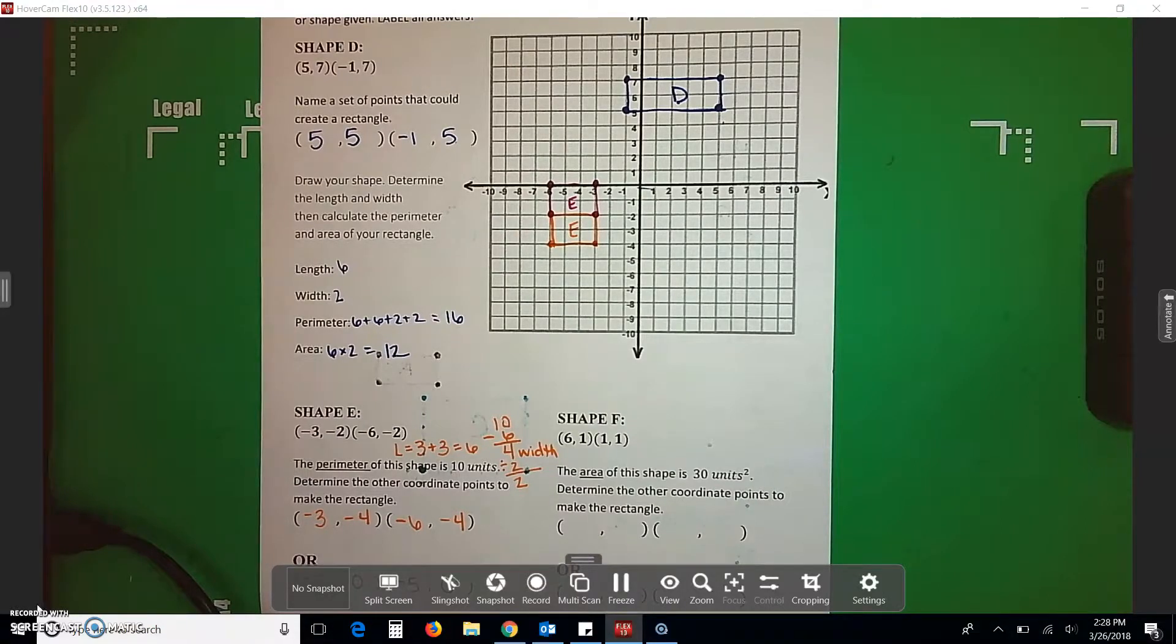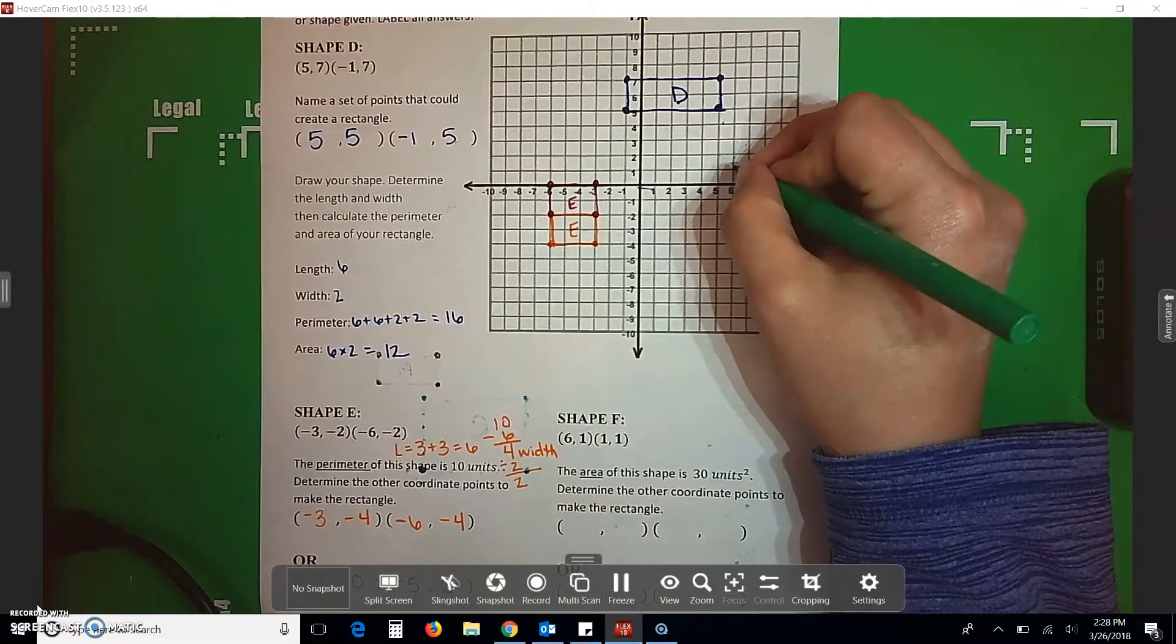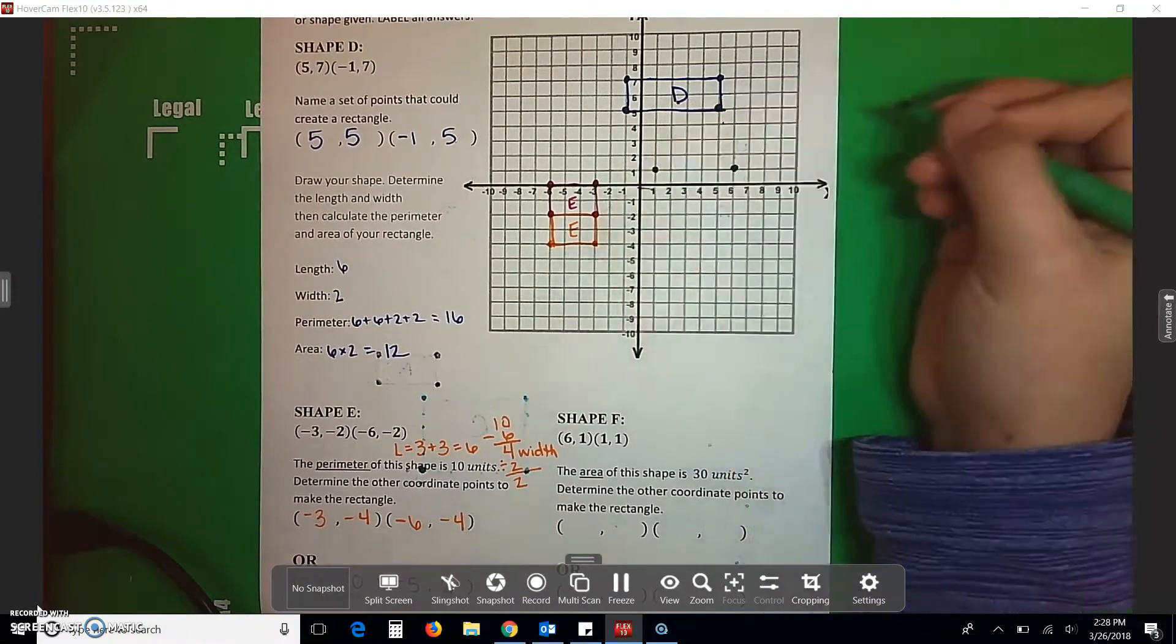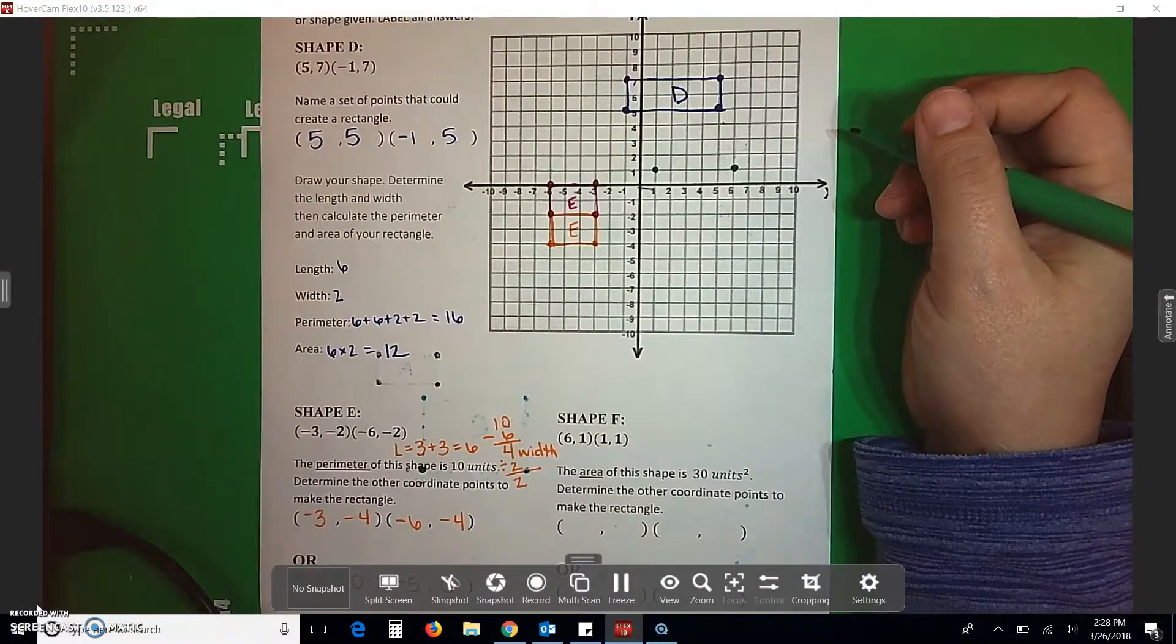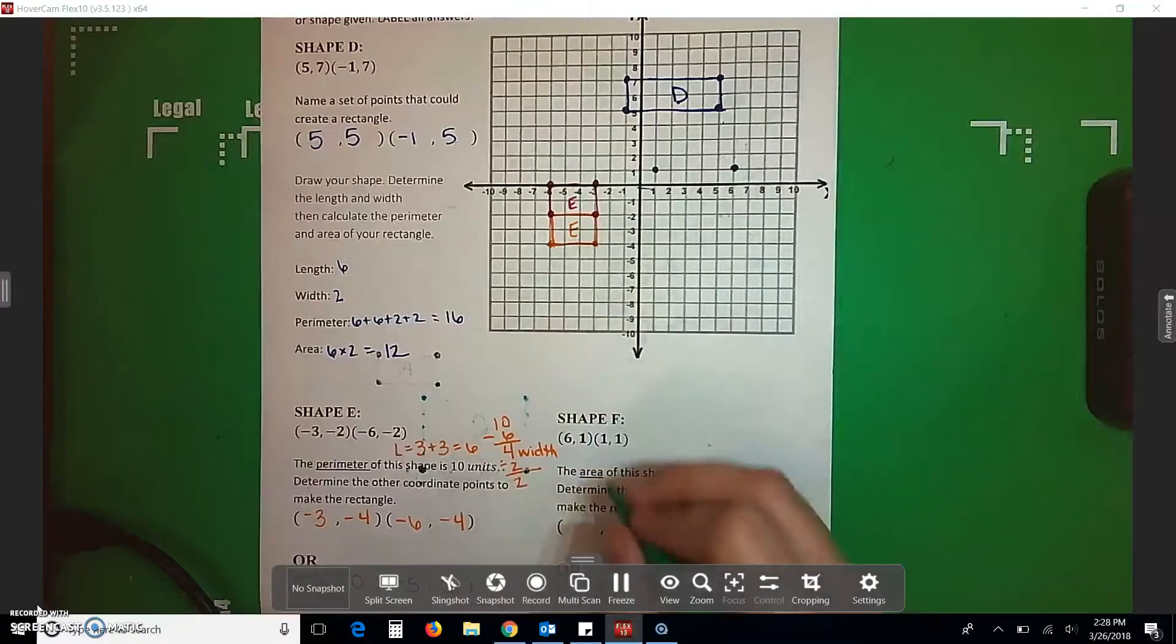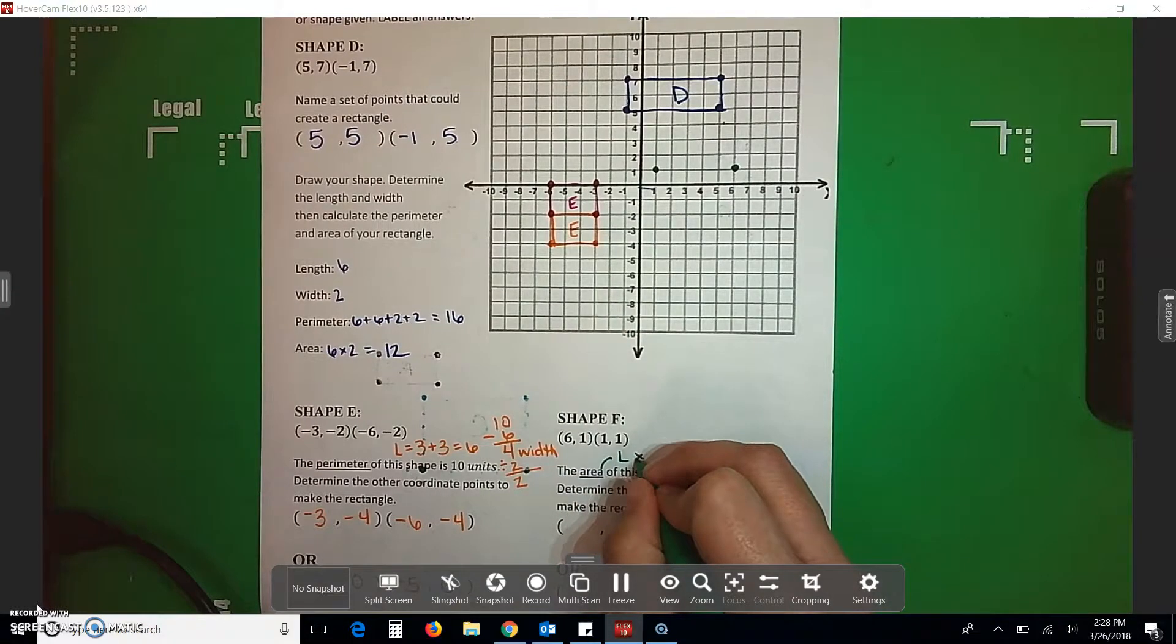Last one is shape F. I'm going to find a good color. Shape F starts off if it's 6, 1 and 1, 1. The area is 30 units. Determine the other coordinate points to make a rectangle. Well, we know the area is length times width.